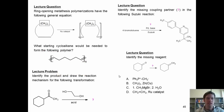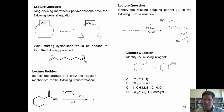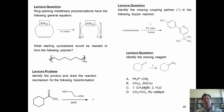Here are some final questions. Ring-opening metathesis polymerizations have a general equation—what starting cycloalkene would you need to form this polymer? Next, identify the product and draw the reaction mechanism for the following transformation. Next, identify the missing coupling partner in the following Suzuki reaction. And finally, identify the missing reagent. That brings us to the end of this lecture. I hope it's been enjoyable and illuminating. Stay tuned for our next lecture in which we'll learn about addition reactions to alkenes.